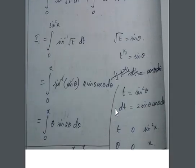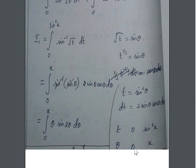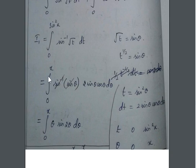Since the question is in terms of t, the limits are 0 and sin²x. We now convert these into θ. Applying t = 0: sin²θ = 0, so θ = 0. Applying t = sin²x: the sin² cancels on both sides, giving x = θ, therefore θ = x. So the new limits are 0 to x.